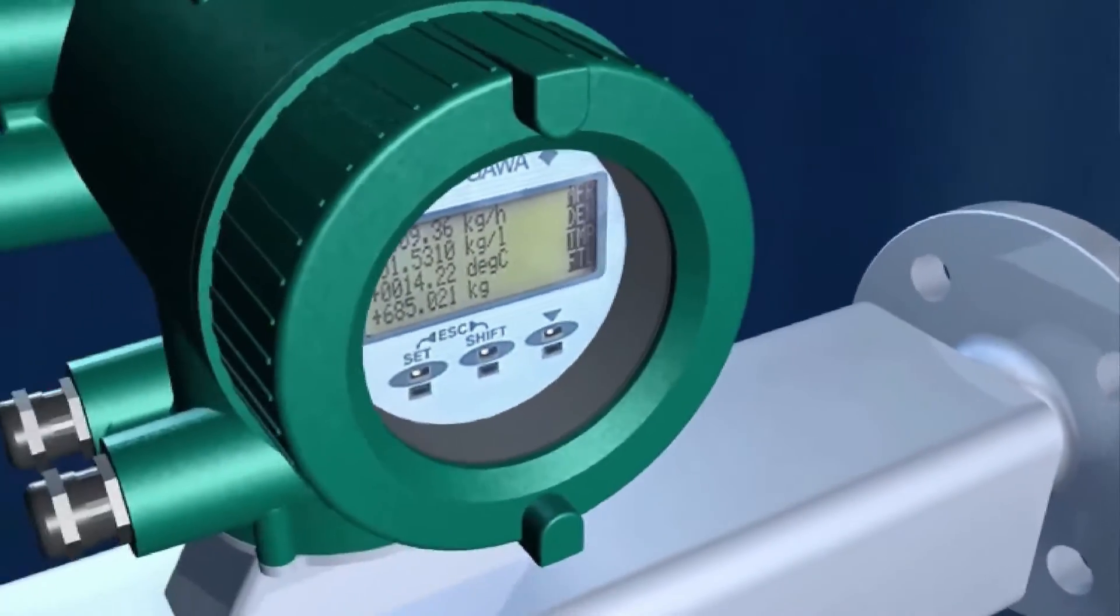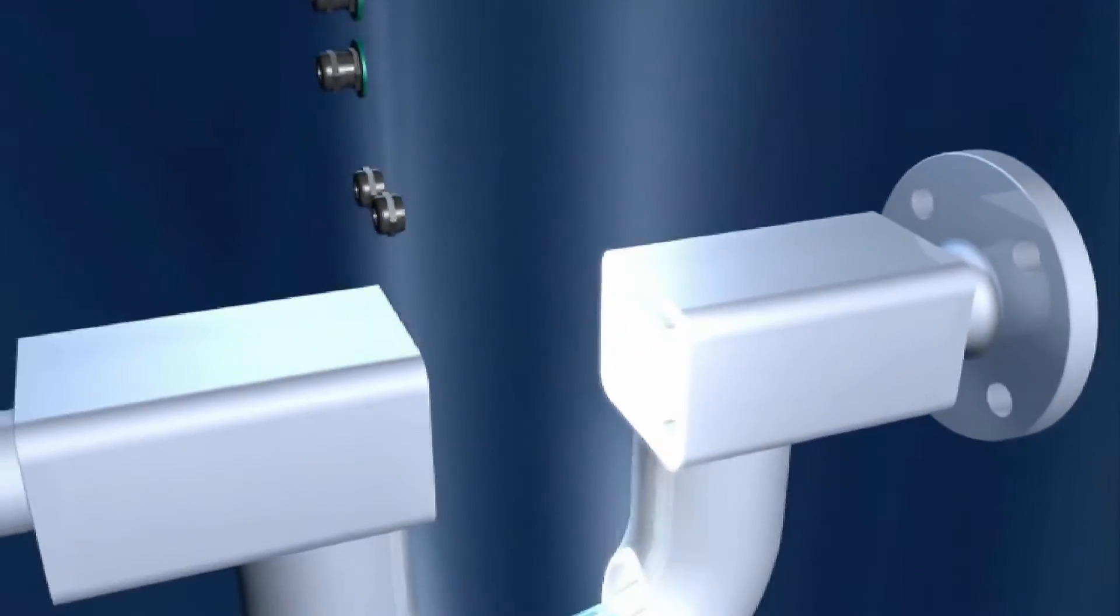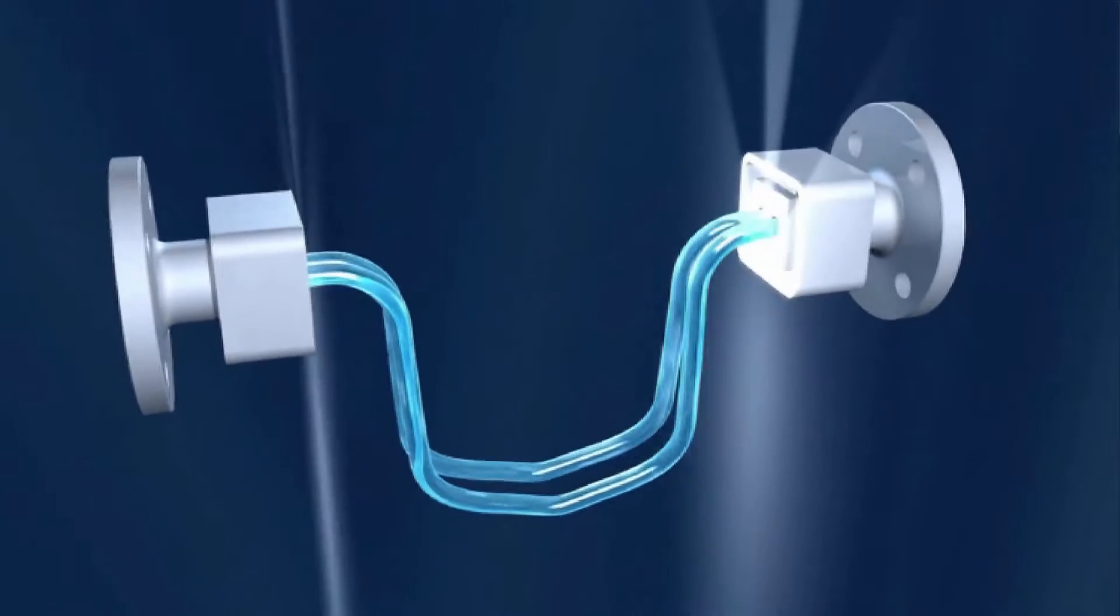A Coriolis mass flowmeter operates on this principle to deliver the most accurate measuring results. See for yourself.